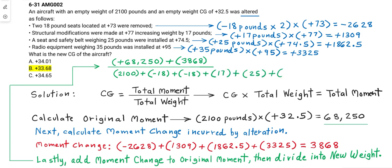We are taking account of all of the add and remove weights added to the original weight. So the new empty weight CG after the alterations have taken place is equal to positive 33.68.